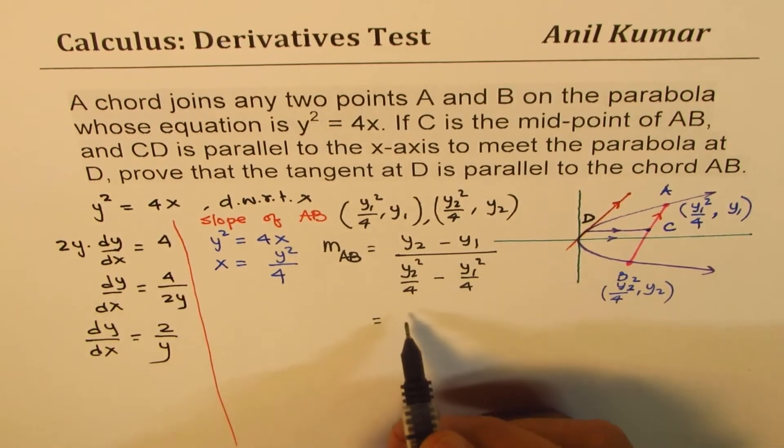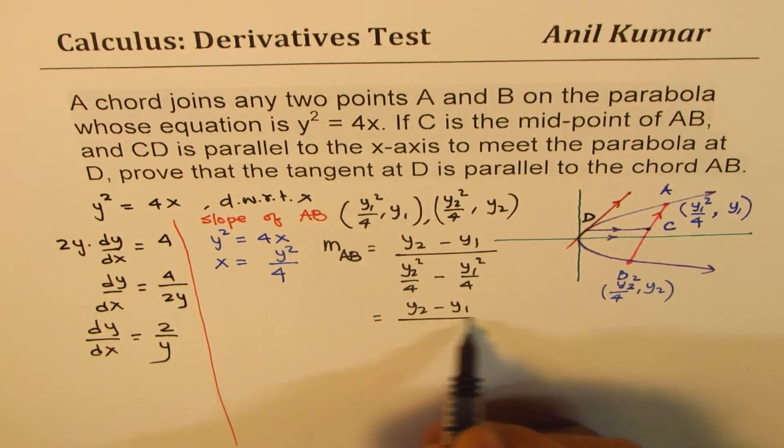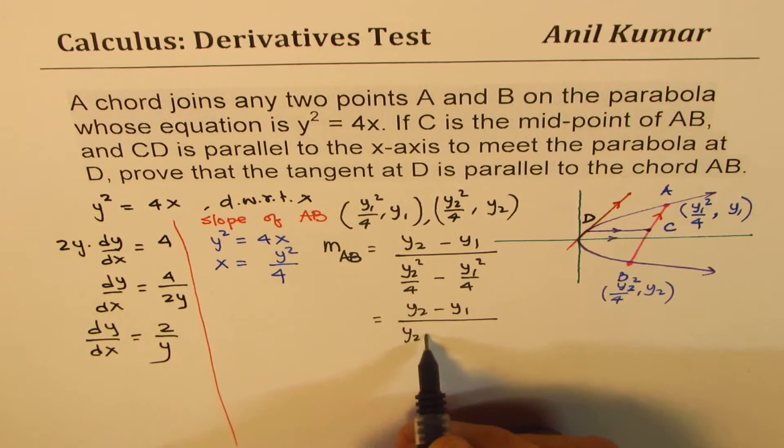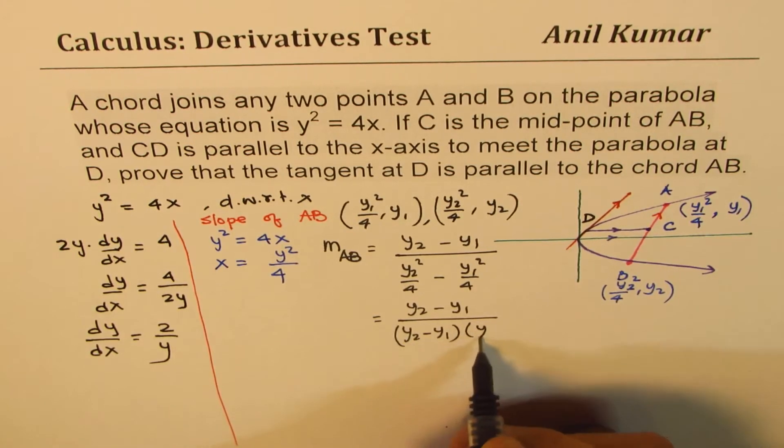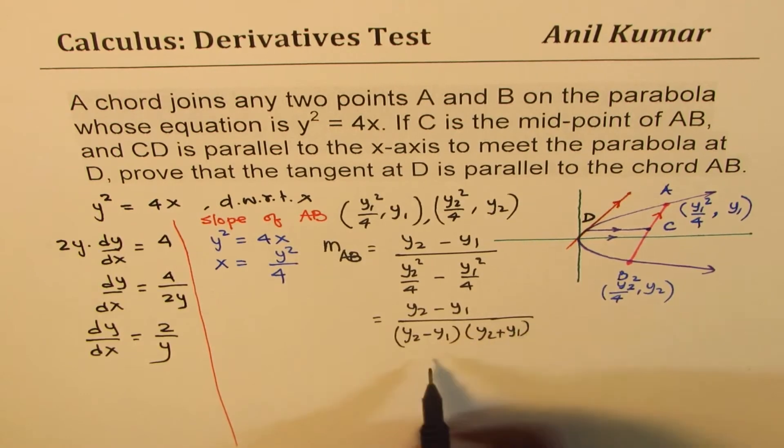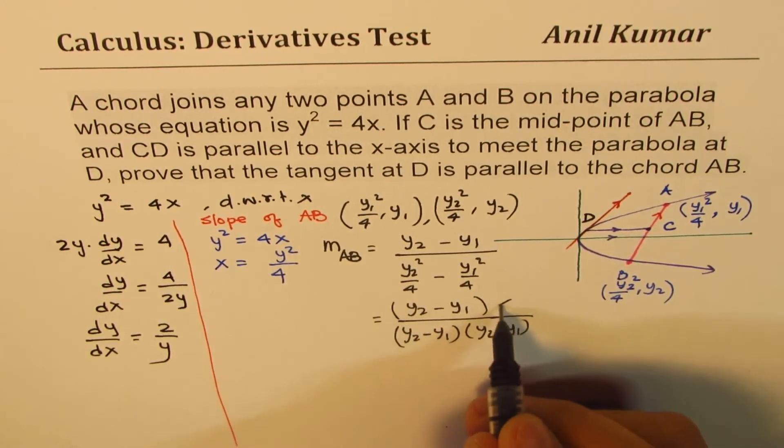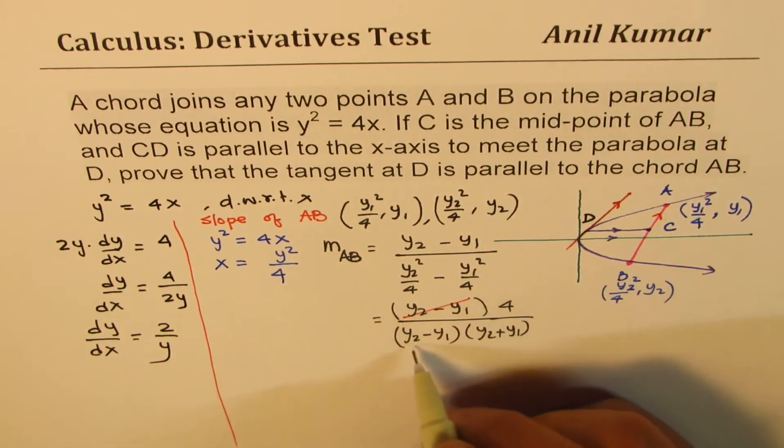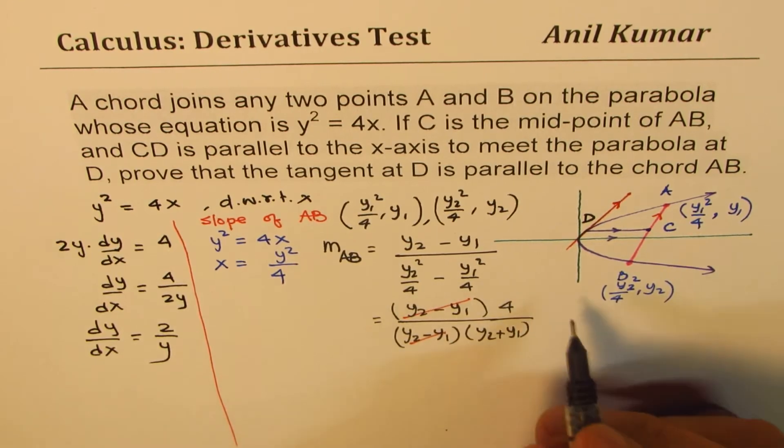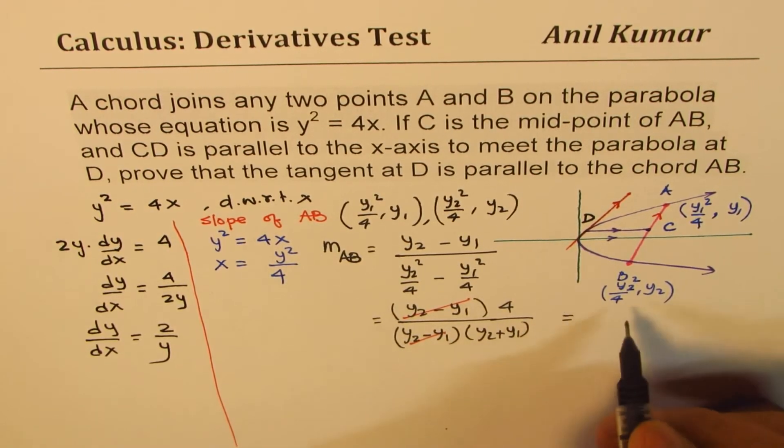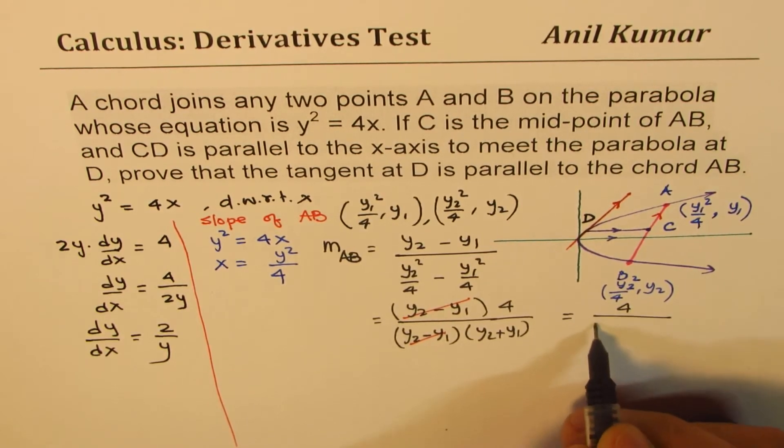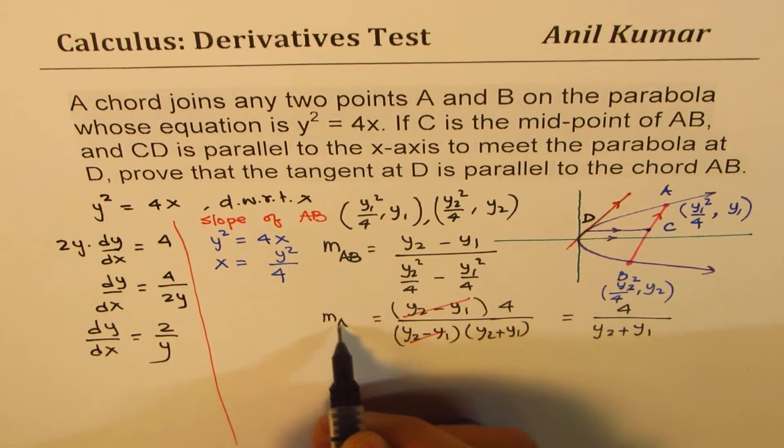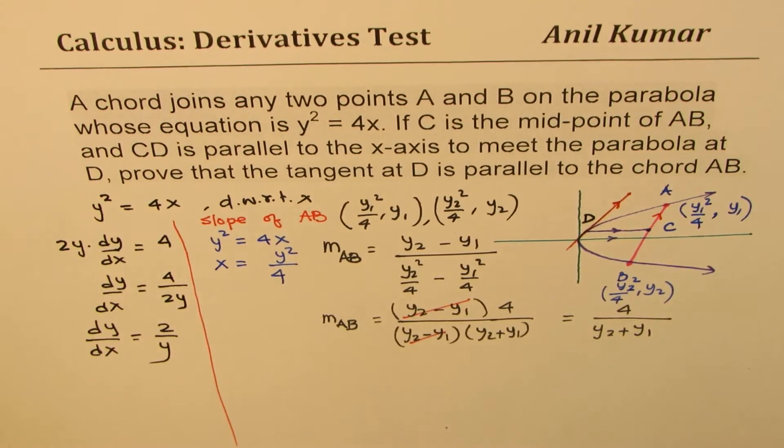Now 4 is a common denominator, so we could write this as (y₂ - y₁) over, we have this minus this, which I could factor. So I could write this as (y₂ - y₁)(y₂ + y₁), and this divided by 4 could be written in the numerator times 4. Let me simplify this by canceling the common factors. That gives you the slope as 4/(y₂ + y₁).